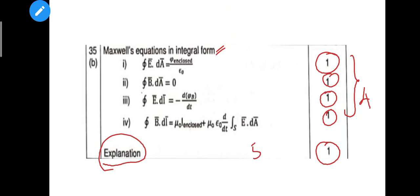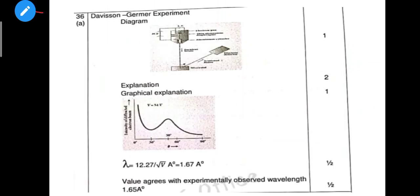Next, the Davisson-Germer experiment. That is one diagram, explanation is 2 marks — this is full theory.